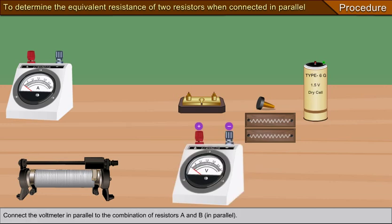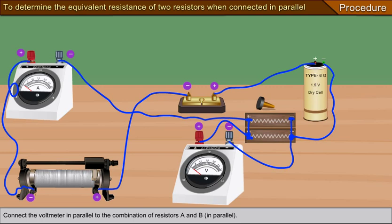Connect the voltmeter in parallel to the combination of resistors A and B in parallel.